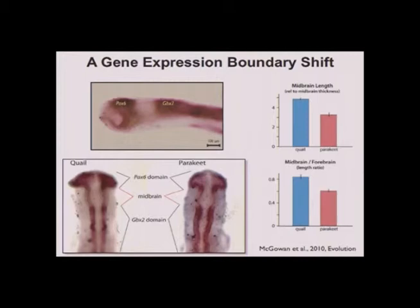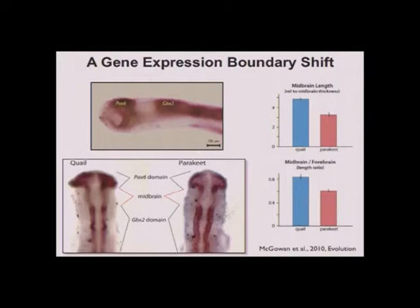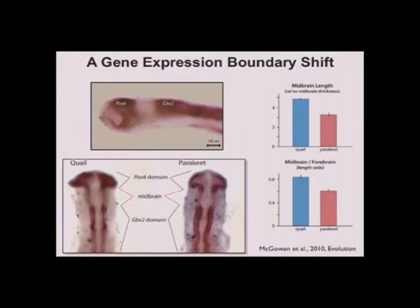So we now have two developmental mechanisms that allow you to change the size of a particular region: early boundary shifts and delays in neurogenesis. I really wanted to know the difference between doing it one way versus the other. From a theoretical point of view, delaying neurogenesis is very powerful, but there might be other consequences. Does a tectum always become larger by one mechanism or sometimes by another? I thought it would be nice to transition into an experimental mode and test some of these hypotheses.